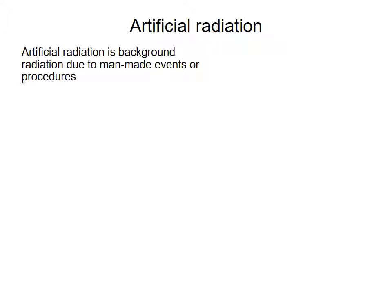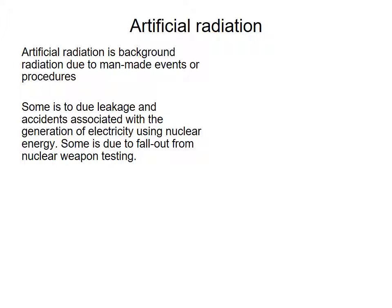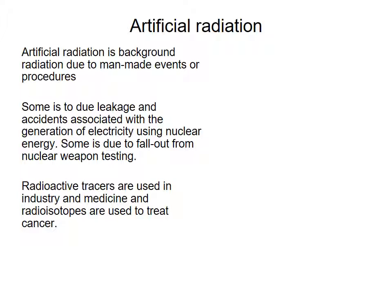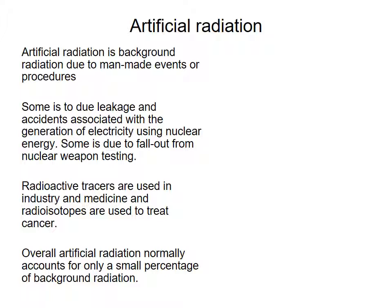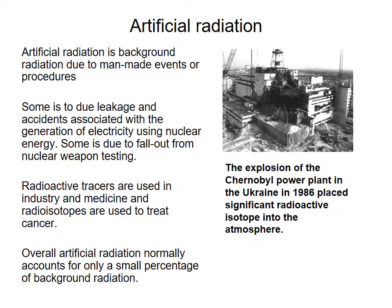There's also artificial radiation due to man-made events. So, for example, Fukushima, where you are releasing radiation from nuclear testing on the Korean Peninsula, radioactive traces used in medicine in treating cancer. And overall, though, artificial radiation is only a really small percentage of background radiation. So an example there being the explosion of the Soviet nuclear power station in Ukraine in 1986. That's pushed a lot of radiation up into the atmosphere.